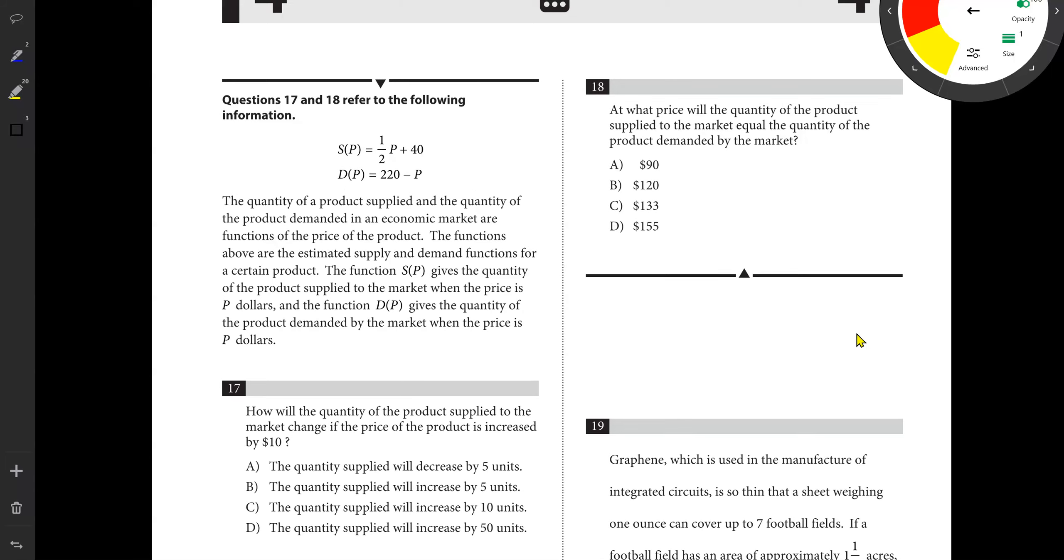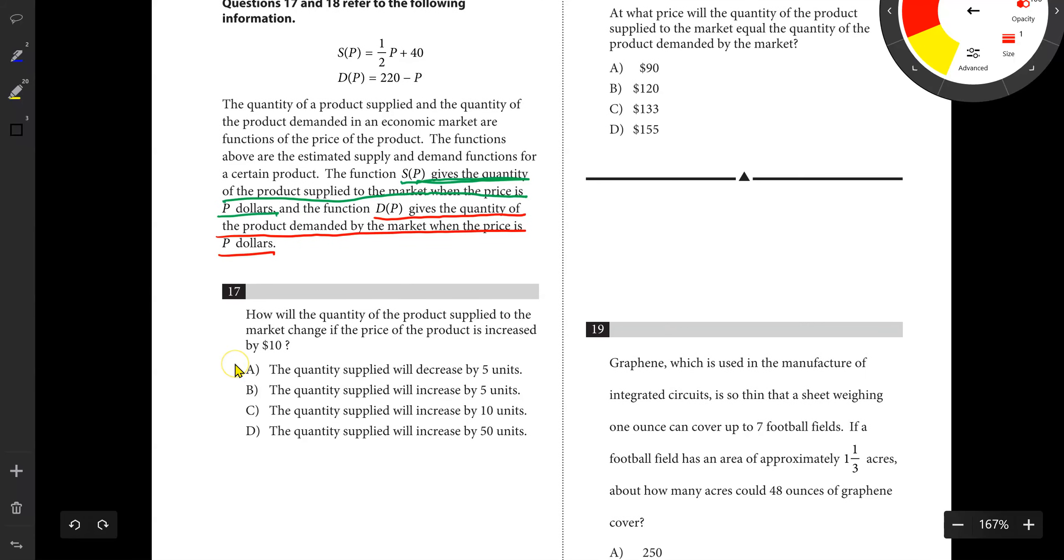Let's keep it going. We're looking at number 17 and 18. Go through and read what this stuff represents. S of P gives the quantity of product supplied, and D of P gives the quantity of the product demand in a certain market.